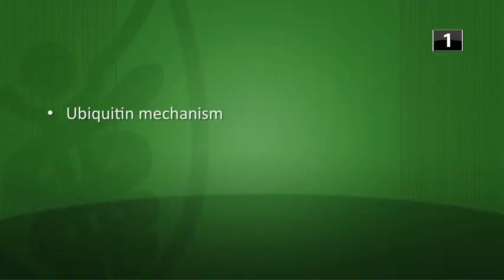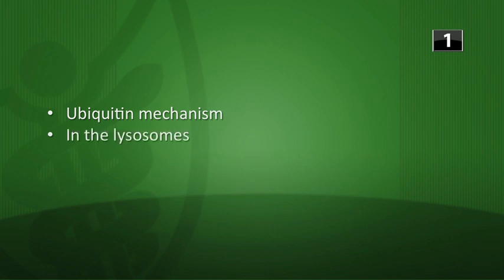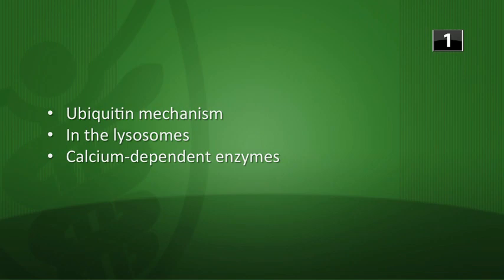It's time for the three-question warm-up for Pharm Basics 5. What are the three different mechanisms cells employ to break down proteins? There's ubiquitin, with ubiquitin protein ligase; proteins can be broken down in the lysosomes; and then there are the calcium-dependent enzymes as well.